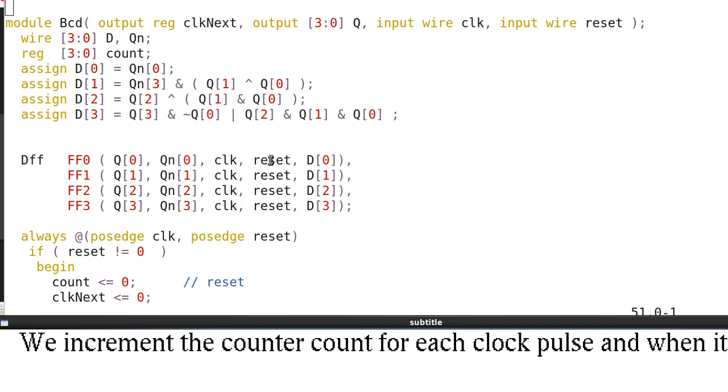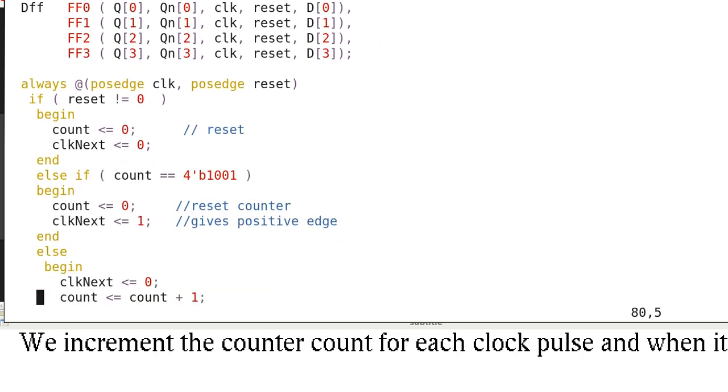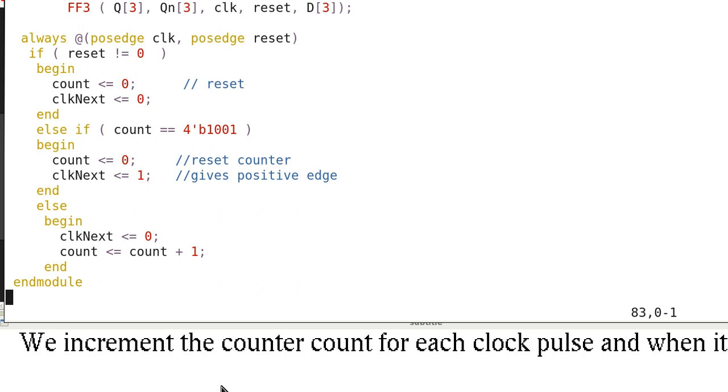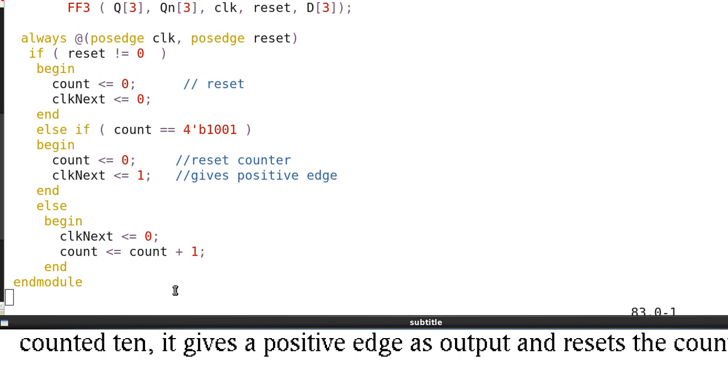We increment the counter count for each clock pulse as shown here. And when count counts to ten, it gives a positive edge as output and resets the counter as shown here.